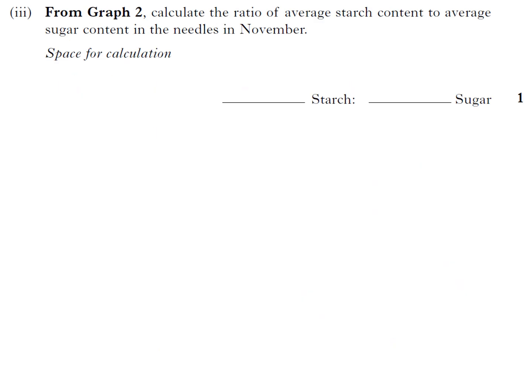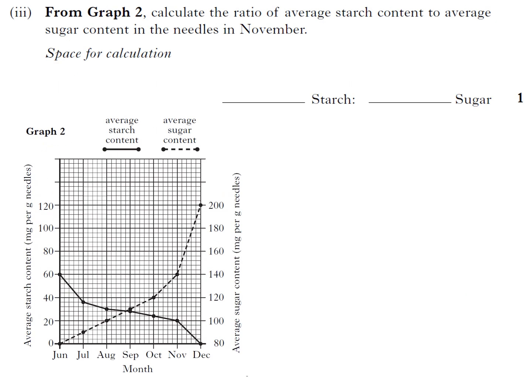From Graph 2, calculate the ratio of average starch content to average sugar content. This is the double axis, remember, so you're going to have to be careful. Starch content in November, so I'm looking at this point here and this point here.